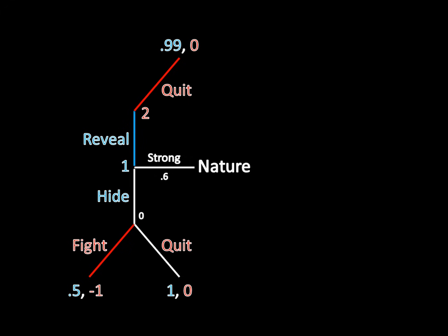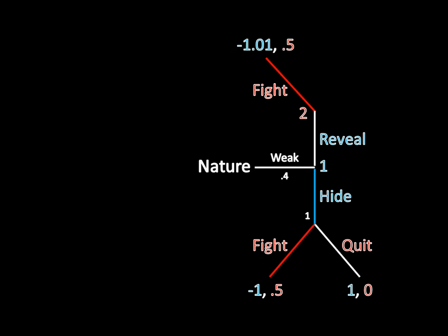Now let's check the right side of the game tree and make sure that the weak type doesn't have a profitable deviation. Currently, he hides. And if he hides, then Player 2 fights, and Player 1 gets a payoff of negative 1. Negative 1 being the important piece of information right here.